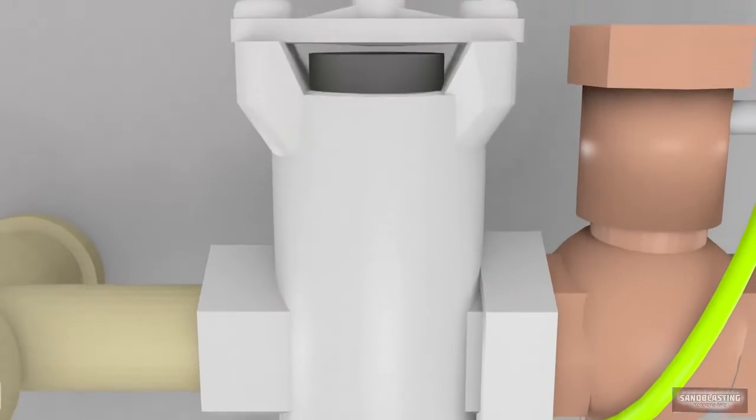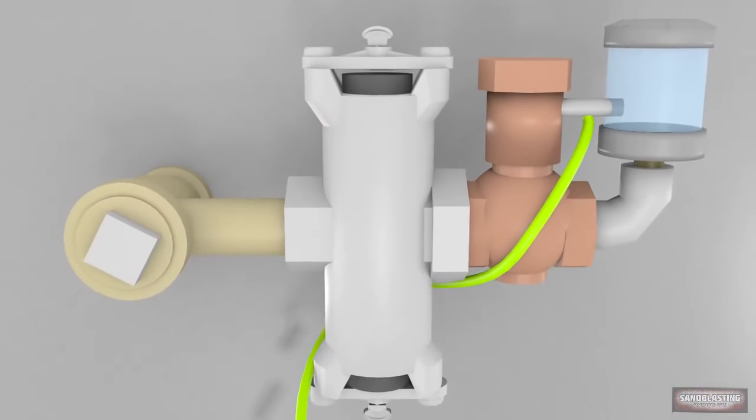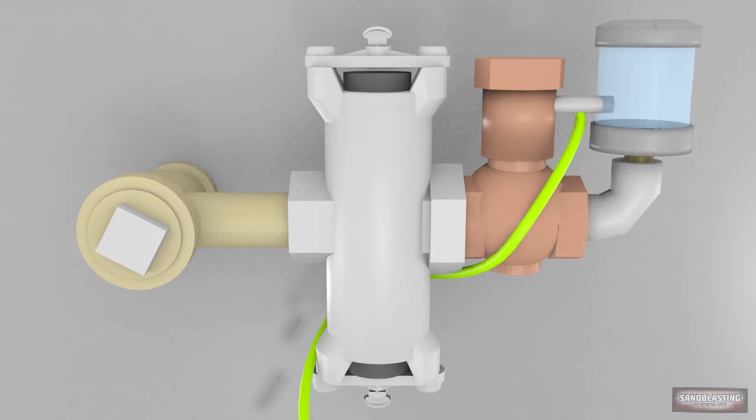The Abrasive Trap. Fitted with a cone-shaped filter, the abrasive trap prevents abrasive from traveling through your outlet valve. This protects your equipment and ensures no blockage.